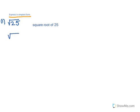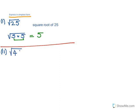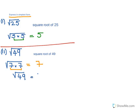Square root of 25: we know that 25 is 5 into 5, there are two fives, so square root of 25 equals 5. The next is square root of 49: we know 49 is 7 into 7, so we have two sevens — they come out as one seven. So square root of 49 equals 7.